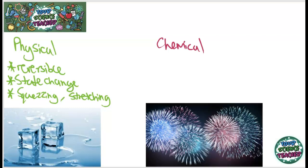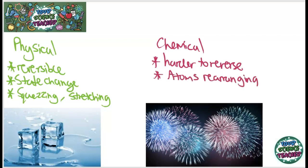Chemical changes, however, are a lot harder to reverse. This is because you are breaking and making bonds, and those atoms are rearranging. Even baking a cake is a chemical change. You start off with a kind of liquidy dough, and once you have put it inside the oven, bonds are being broken, bonds are being made, and you end up with a cake that has completely different properties to what you started with, and it's incredibly hard to go back to that sloppy dough.